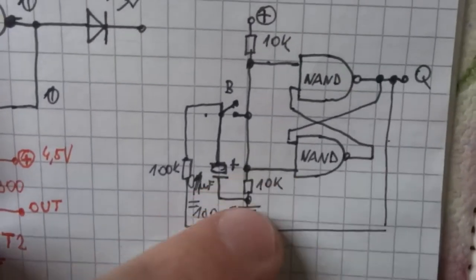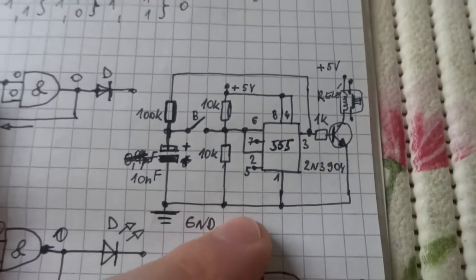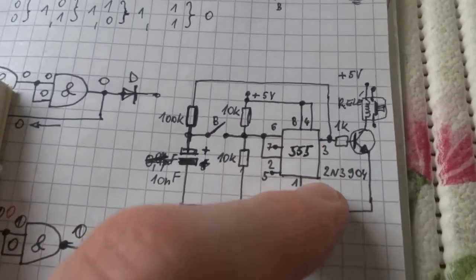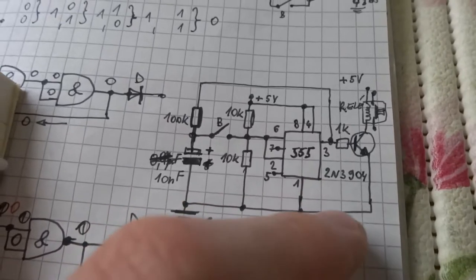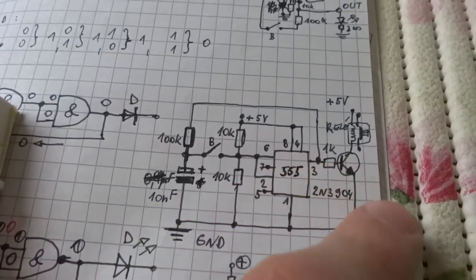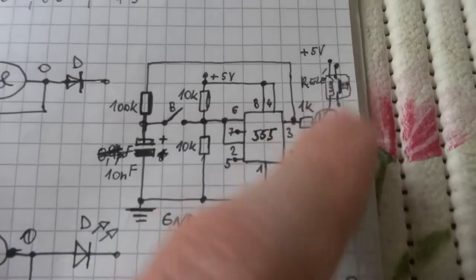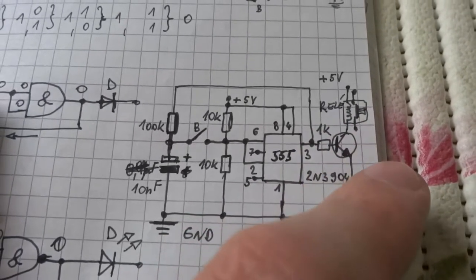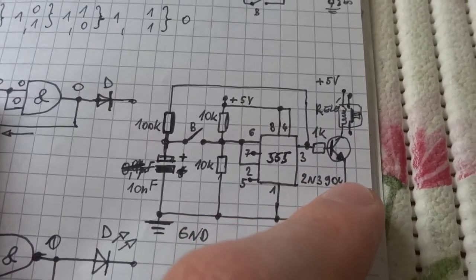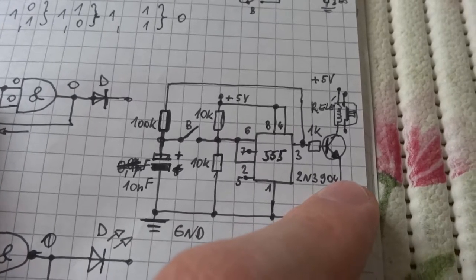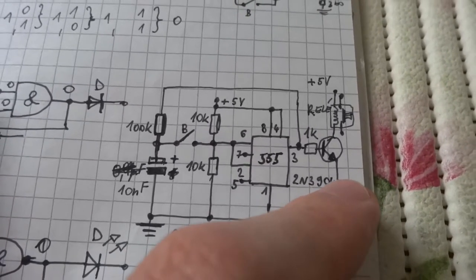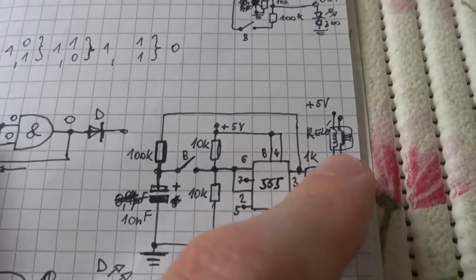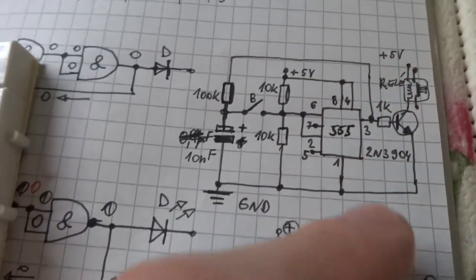The output is 1kΩ and you can put here 2N3904 transistor relay and you can switch another circuit. Here I use this LED with this resistor.